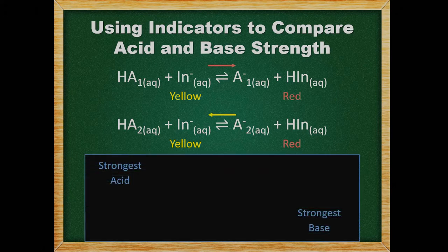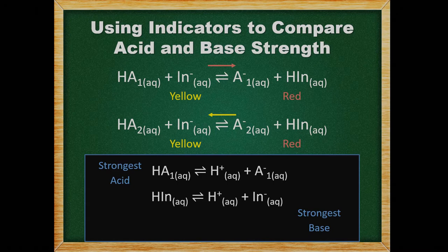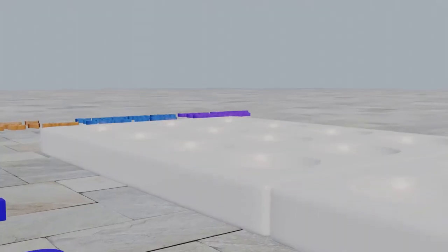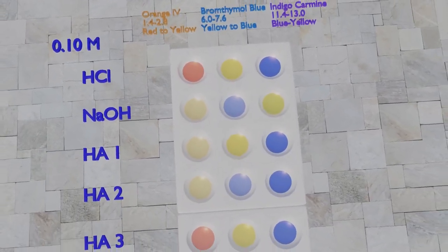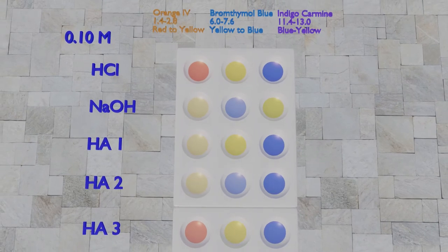We could organize these into a table, similar to the table of the relative strengths of Bronsted-Lowry acids we use in this chapter. Acid 1, we determined, was the strongest so it will go at the very top. The indicator goes below, and acid 2, which was weaker than the indicator, can go below that. Here is an example of something you might see if you were to do one of these experiments. The colors of the solutions can help you determine which conjugate pairs contain the strongest and weakest acid. For practice, pause the video and try to order the acids from strongest to weakest based on your observations. Use hydrochloric acid and sodium hydroxide as references.